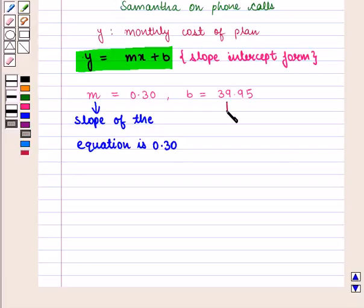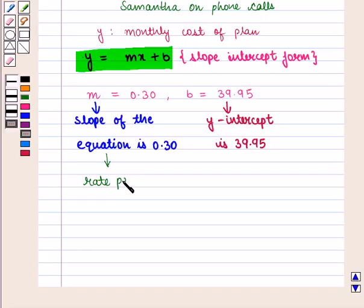And the y-intercept is given by 39.95. Now we know that slope tells us the rate per unit, and intercept gives us the initial value.